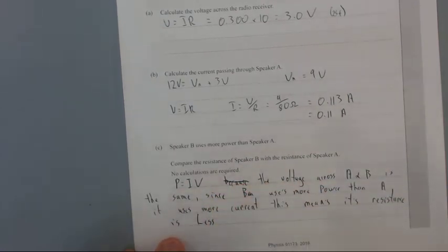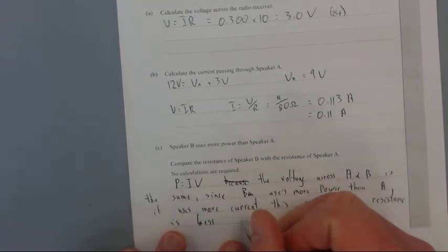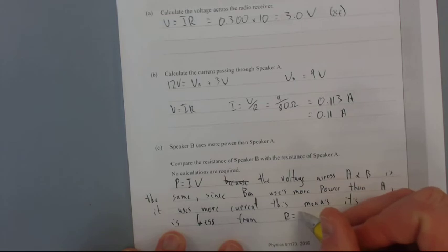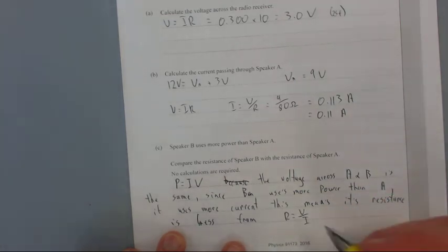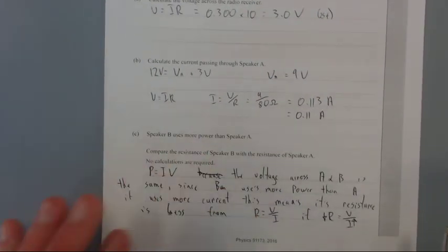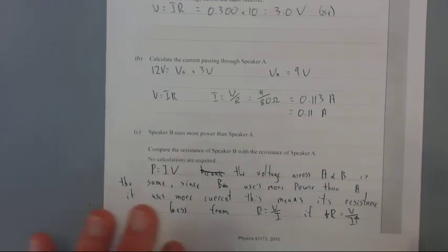From R equals V over I, if you increase I... So if R goes down equals V over I goes up. If I goes up, R goes down. That's just the reasoning.